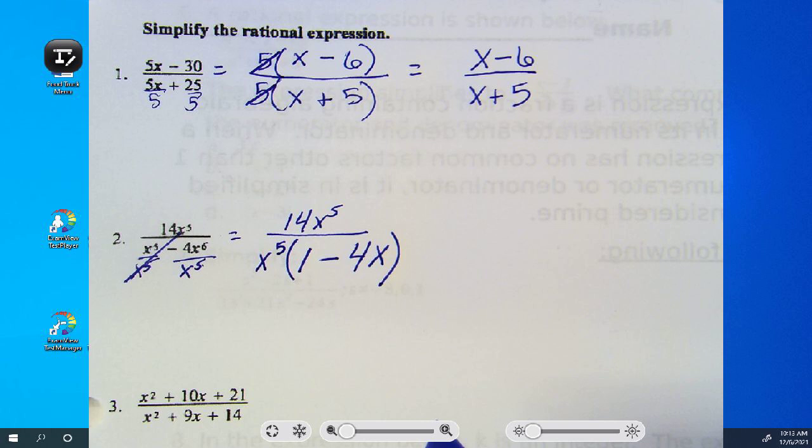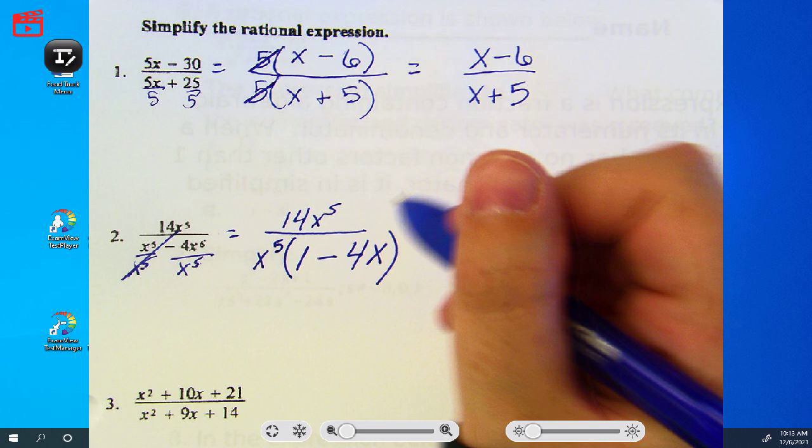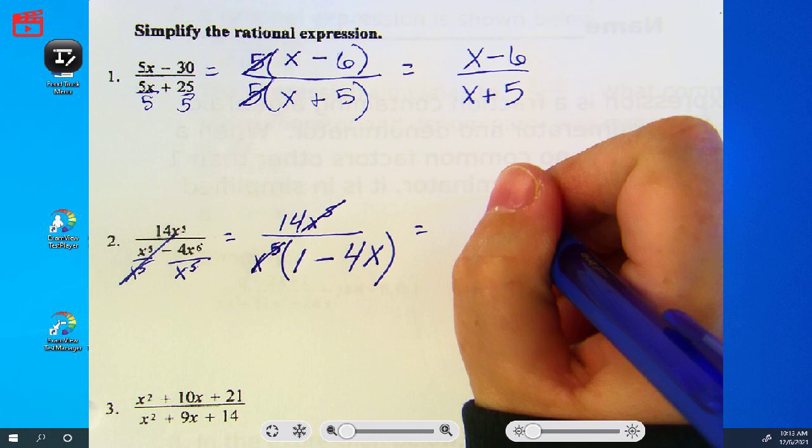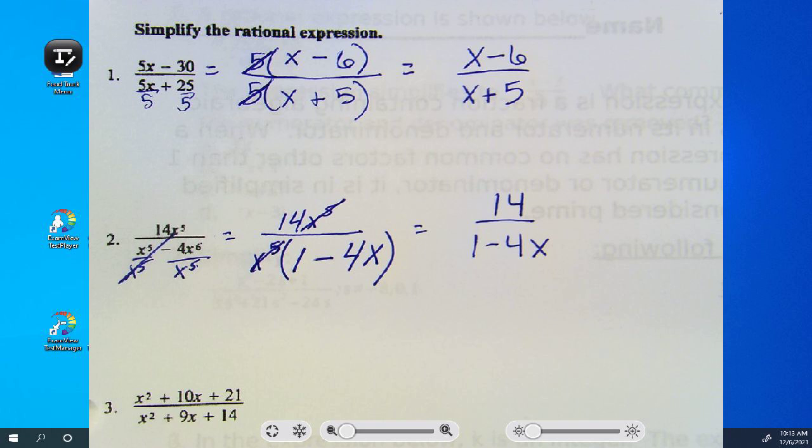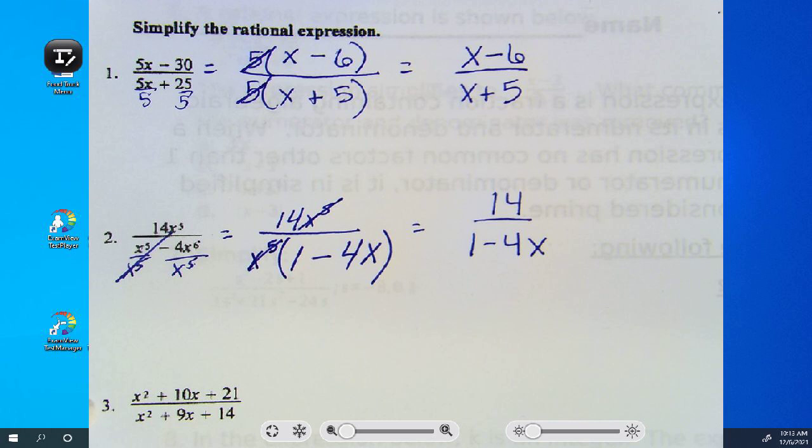6 minus 5 is 1. What do you see we can simplify, Riley? The x to the 5th cancel out. You'll have 14 over 1 minus 4x. Questions?